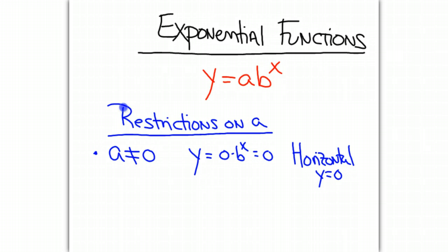The second restriction on a is that a has to be a positive number. A cannot be negative. We're defining a to be the starting amount for our function, and we can't start with a negative quantity of anything. So for a, it cannot equal 0, and a has to be greater than 0.